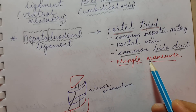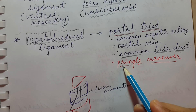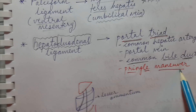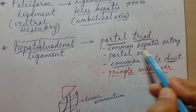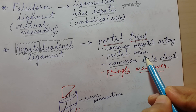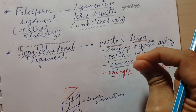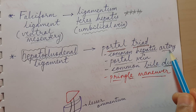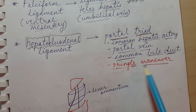The Pringle maneuver is used during liver surgery to stop blood flow going to the liver. The common hepatic artery and portal vein both carry blood to the liver. When you pinch the hepatoduodenal ligament, the blood supply going to the portal vein will stop, which reduces the chance of bleeding. That is the use of the Pringle maneuver.